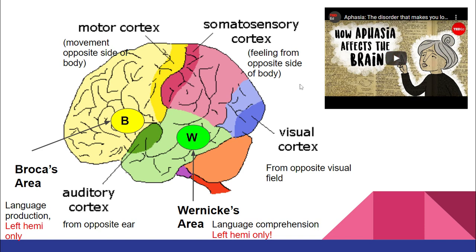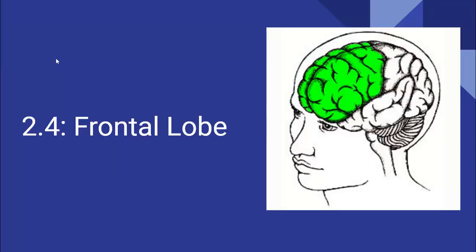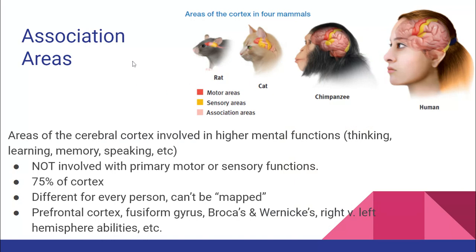The frontal lobe is the most complex — it's the most human part of us, acting as an association-creation machine. All learning involves creating associations. Other animals like cats and rats have barely any; chimpanzees have much more, closer to ours. What makes humans potentially the most evolved species is that we have the most association area — the most brain space dedicated to processing and creating new associations, enabling higher mental functions like learning, memory, speaking, and thinking.